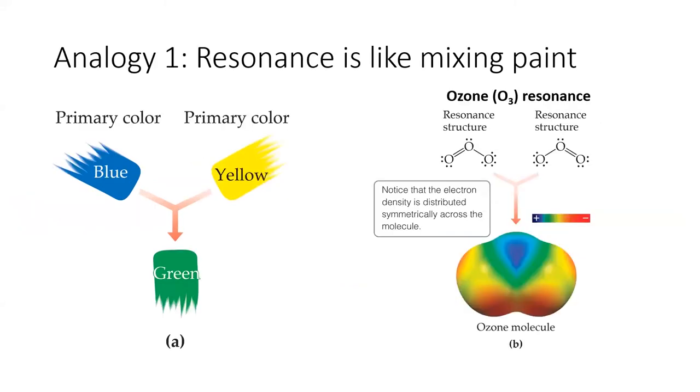In our first analogy, we should think of each resonance contributor like a primary color of paint. For example, when we mix blue and yellow paint, we get green paint. Green is not blue. Green is not yellow. I can describe the properties of green as somewhat intermediate between the properties of blue and yellow. Similarly, let's look at the ozone molecule to the right. It's a combination of the two resonance structures written above. The real properties of ozone are somewhere in between the properties of each resonance structure.